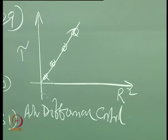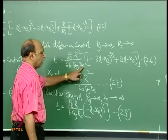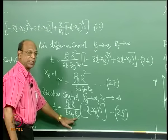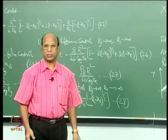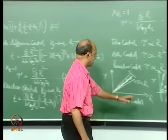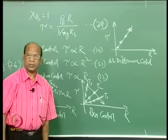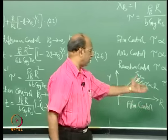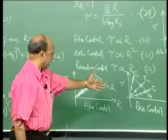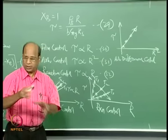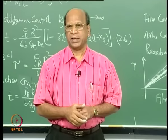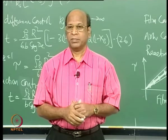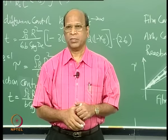Once I know which step is controlling, I can find the corresponding parameter: effective diffusivity D_e for diffusion control, rate constant K_S for reaction control, or mass transfer coefficient K_G for film control. With measurements at different temperatures and three different slopes, I can also calculate the activation energy from a plot of 1/T versus ln(K_S).